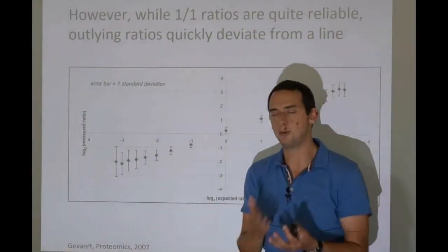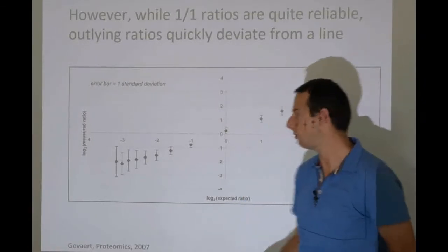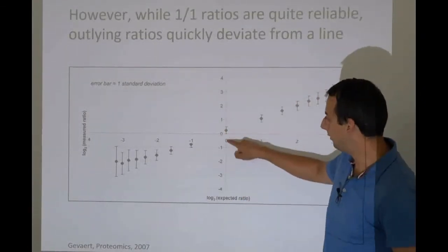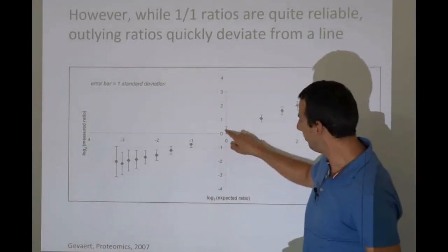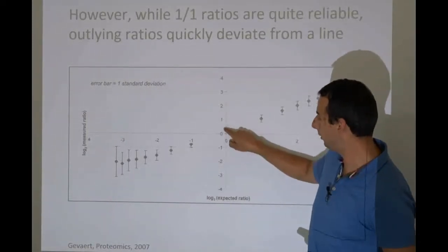and a log 2 range of what we measure versus what we know. This is the expected ratio. We've spiked this, and we know exactly what kind of concentrations there are in the sample. And when it's zero, it means one over one, because the log 2 of one is zero.